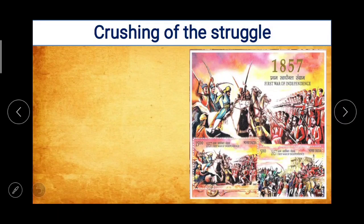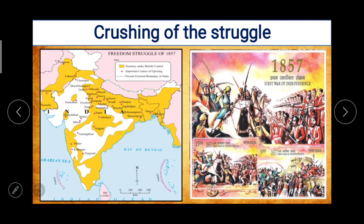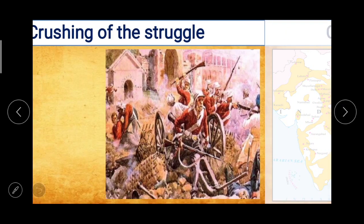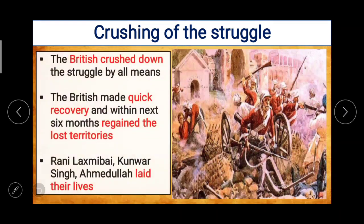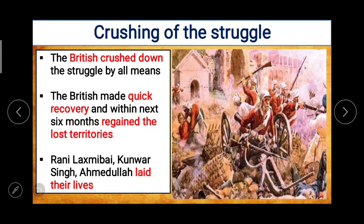The first point we start with today is the crushing of the struggle. On the screen you can see a map of the Freedom Struggle of 1857. The yellow area shows territory under British control, and the red dots show important centers of uprising. The dotted lines show the present external boundary of India.